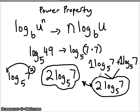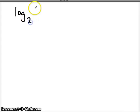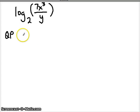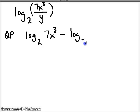The challenge comes when we put them all together in one problem. Let's use all three of these properties to simplify a complex log expression. For example, if I have log base 2 of 7x cubed over y. We have all three properties going on. The first is that we're going to use the quotient property, so I can break this up into log base 2 of 7x cubed minus log base 2 of y.